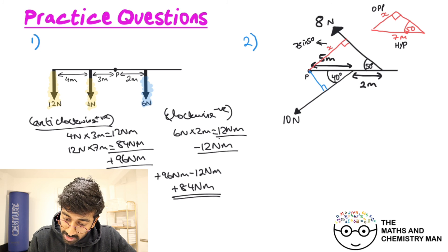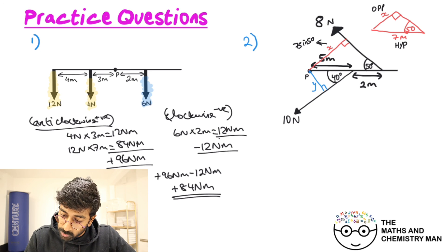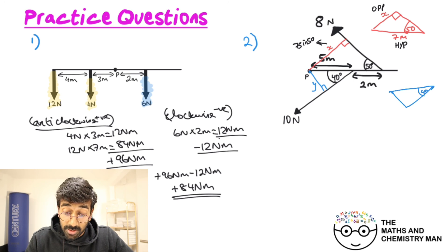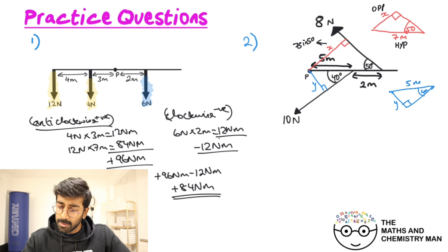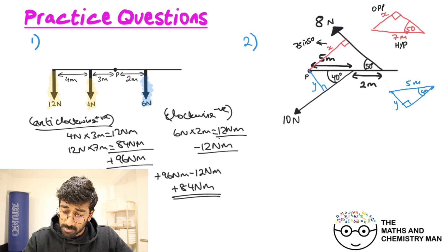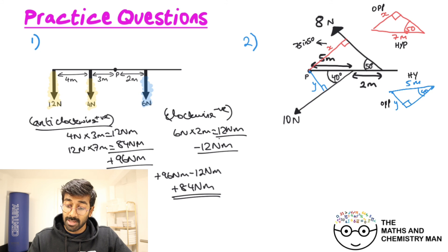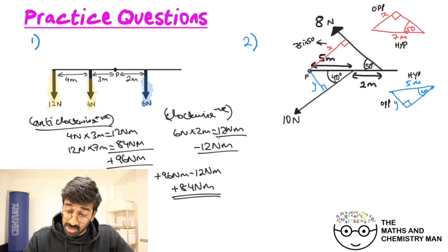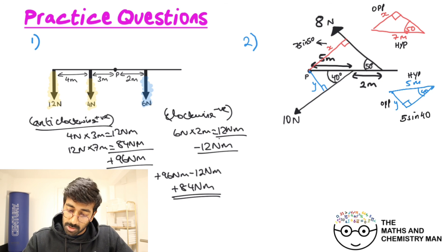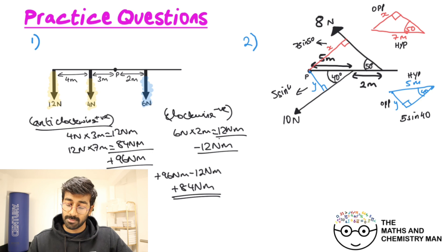For the second perpendicular distance, calling it y: the triangle has 40 degrees, hypotenuse of five meters, right angle, and we need side y. Labeling opposite and hypotenuse, it's the sine ratio again: y equals 5 sine 40. We label that on the diagram.